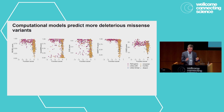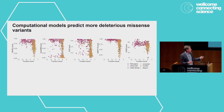Briefly on computational predictors: we took many state-of-the-art predictors and compared them to our function scores. In each case, predictors tend to have many variants in the top-right quadrant where we're calling the variant neutral with SGE but the computational predictor thinks it's deleterious. This was very consistent across predictors.